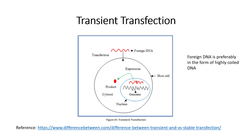In the case of transient transfection, the cell will show expression of the foreign DNA, or the protein coded by that foreign DNA, until the cell is alive and still performing its function. When the cell dies, there is no longer foreign DNA expression. So transient transfection is useful when we need a signal for a short duration of time.